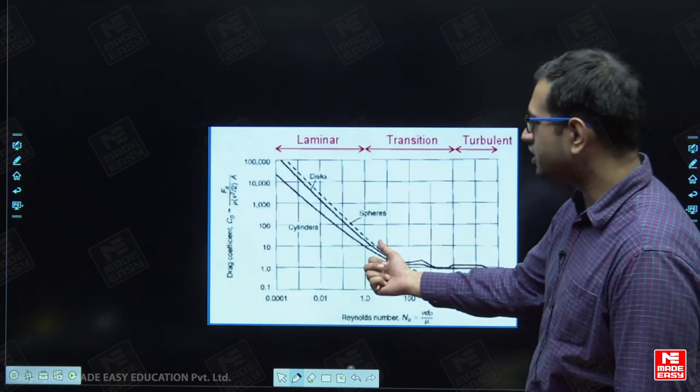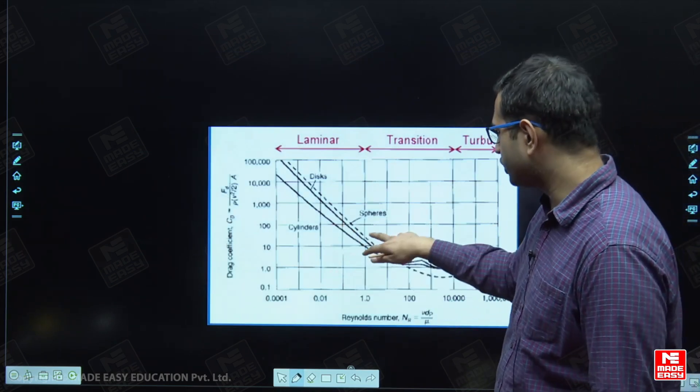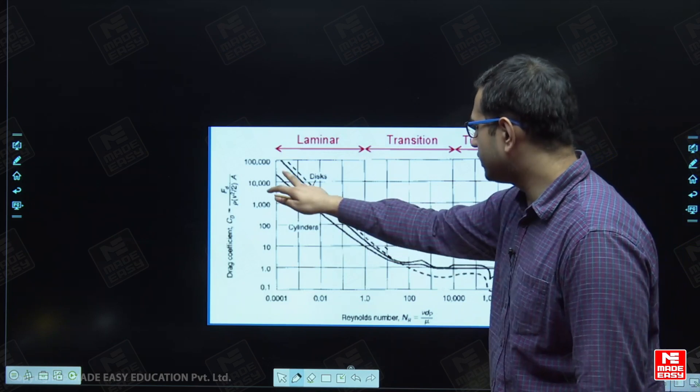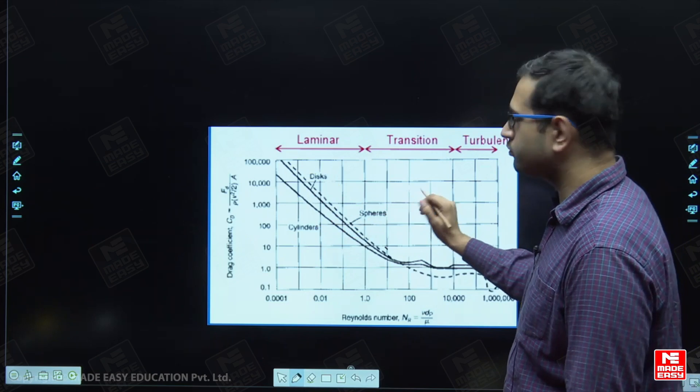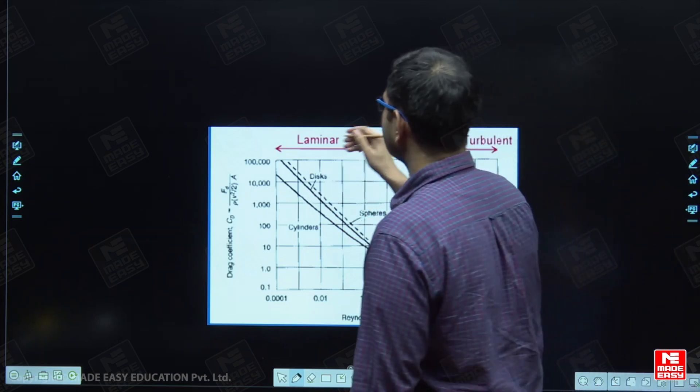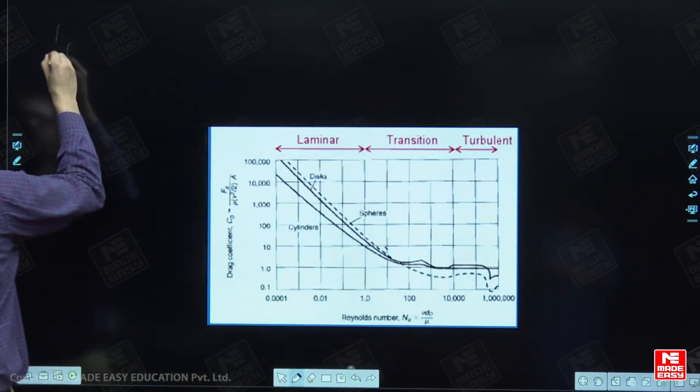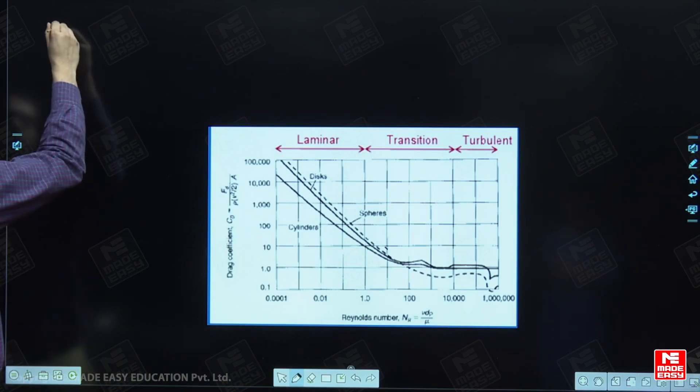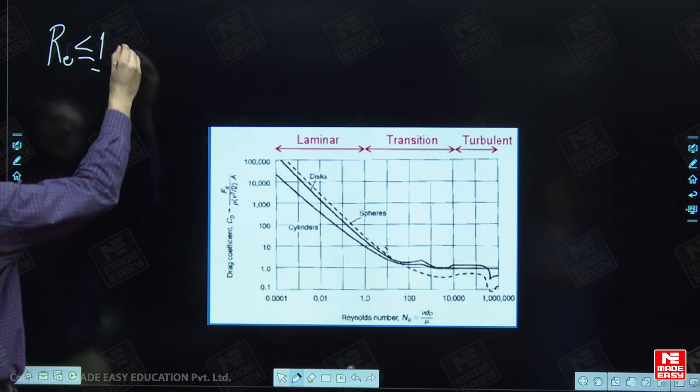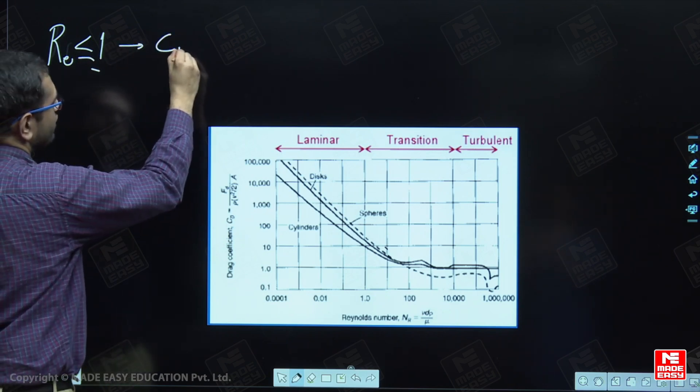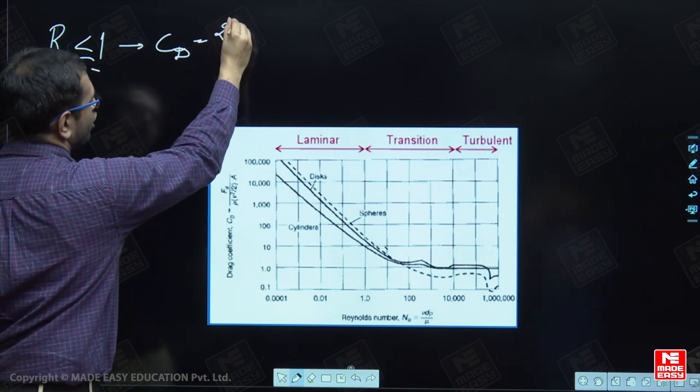Its graphical representation is given like this. For spherical particles, the curve is this dotted line curve. And it can be clearly seen from here that when the flow is laminar, which means the Reynolds number is less than 1, then the coefficient of drag is equal to 24 upon r e.